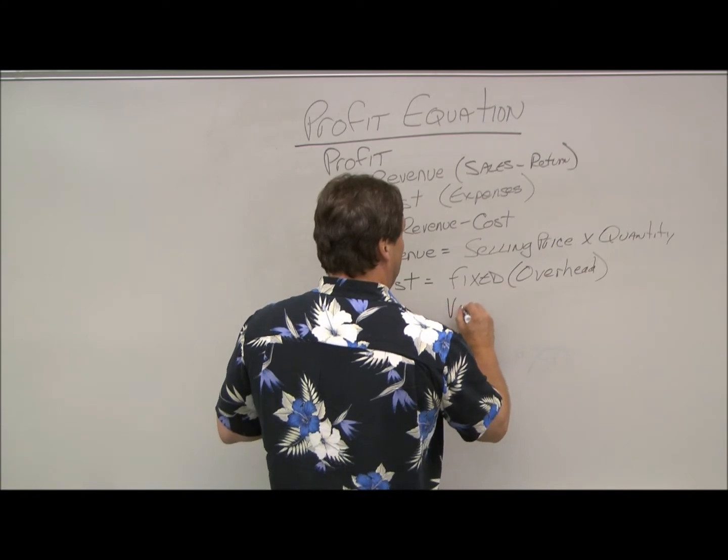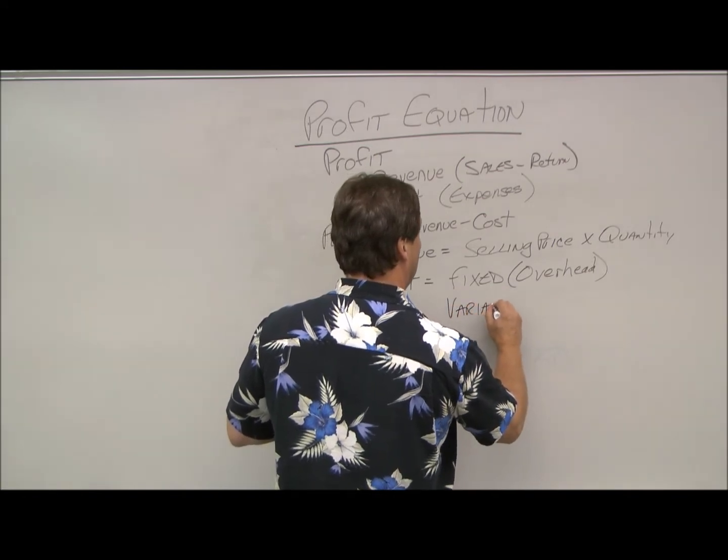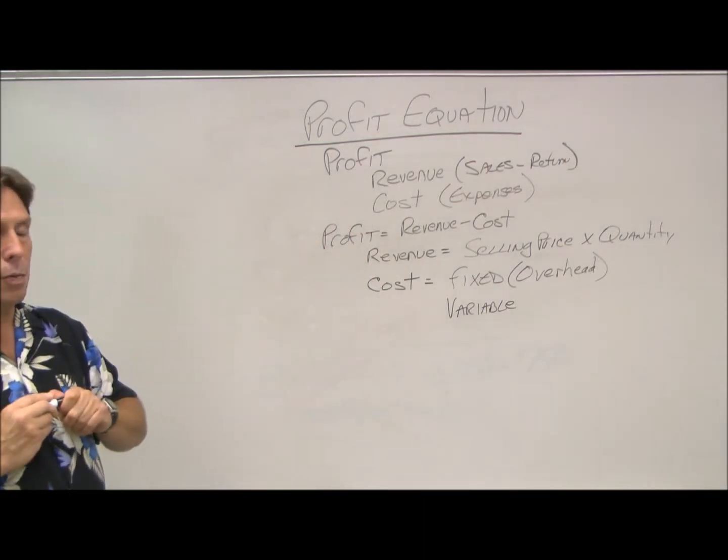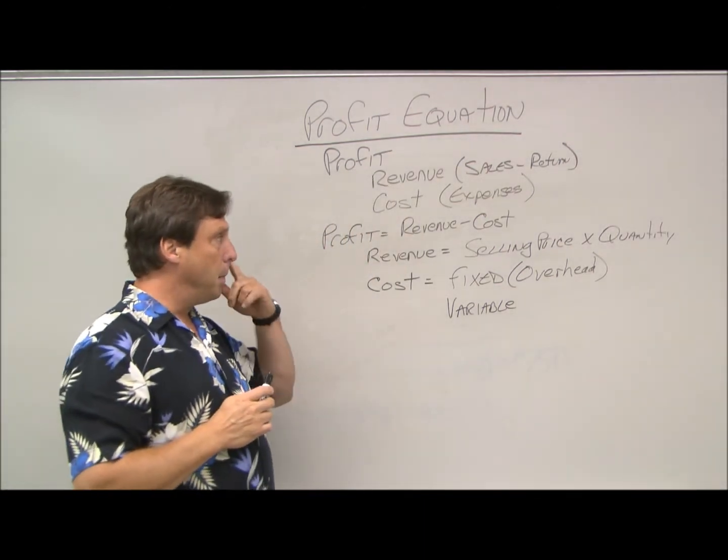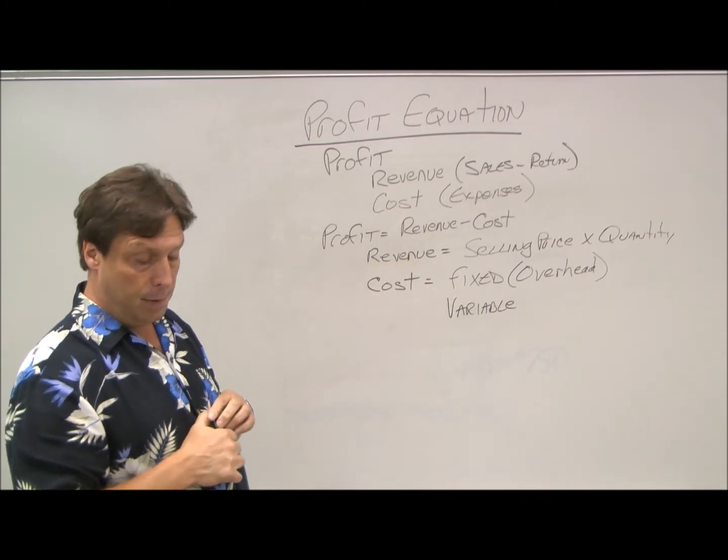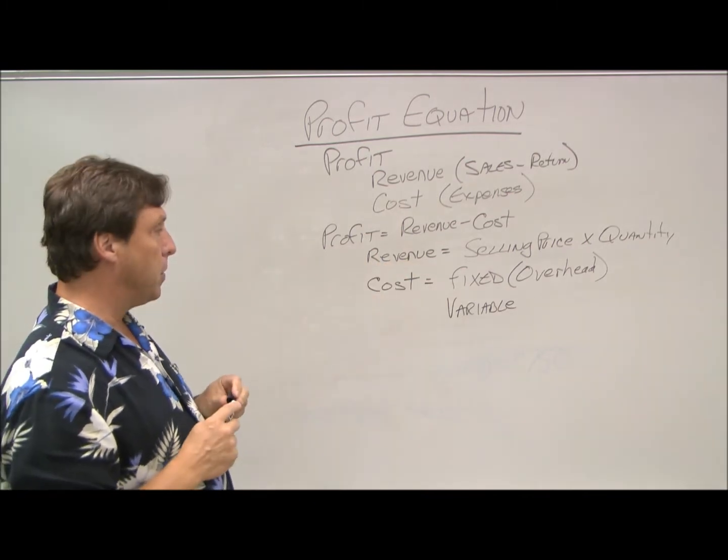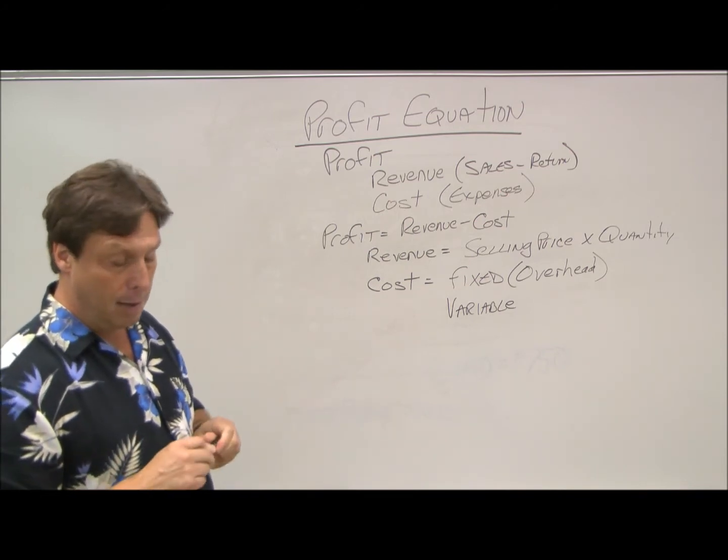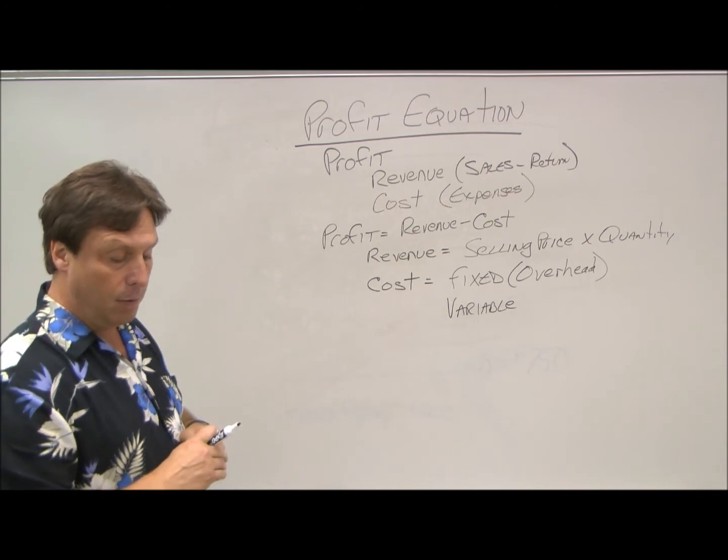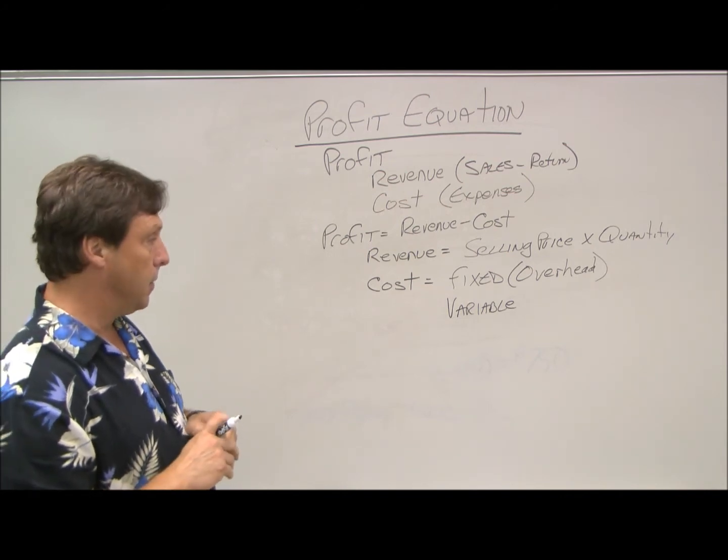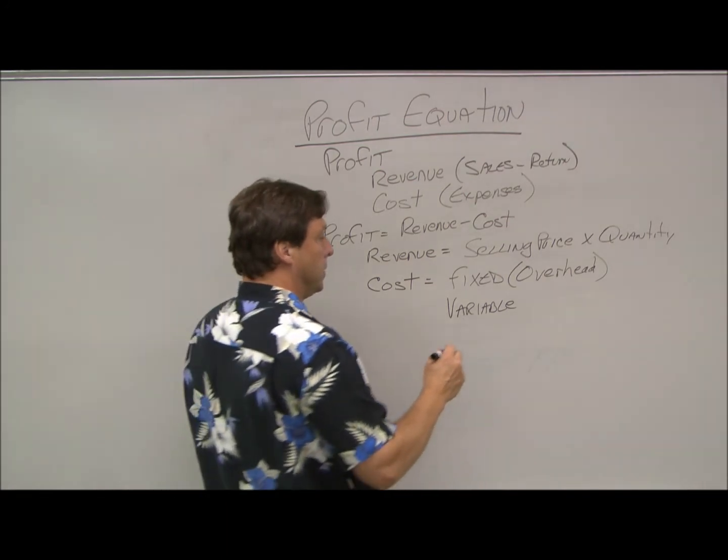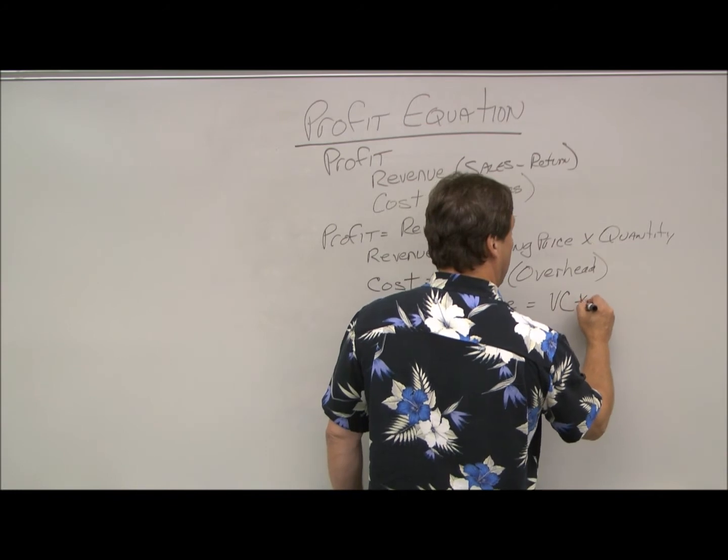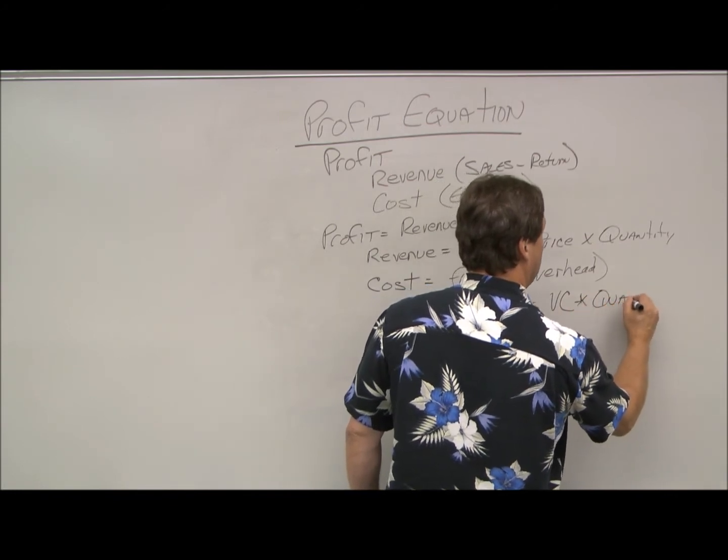But we also have variable. Variable costs are associated with the direct labor and direct materials that go into generating revenue. They're variable because we only make one unit, we only have the variable cost to make that one unit. Whereas we make a thousand, we have the variable cost to make a thousand units. And so the variable costs are the variable costs per unit times the quantity, how many we produce.